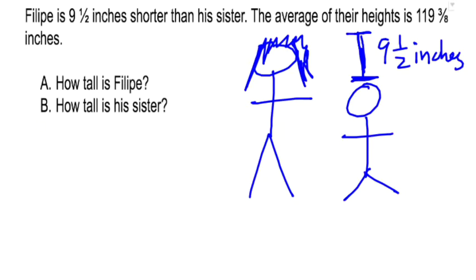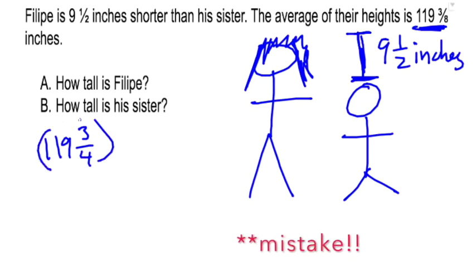So if I start here and double that 119 and 3 fourths times two, that will give me Philippe's height plus his sister's height.